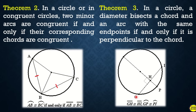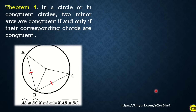Using theorem number three, arc GP and arc PI are also equal. So this part and that part are equal, and arc PI and arc GP are equal as well.